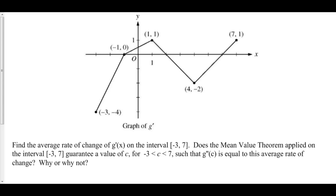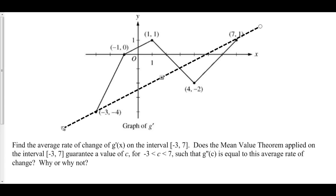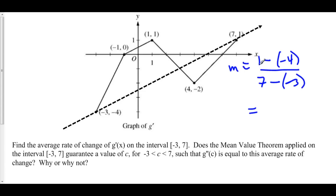Find the average rate of change of g prime on the interval from negative 3 to 7. Does the mean value theorem guarantee a value of c between negative 3 and 7 such that g double prime of c equals this average rate of change? The average rate of change is the slope of the line between the two points. Computing y2 minus y1 over x2 minus x1: 1 minus negative 4 is 5, and 7 minus negative 3 is 10, giving an average rate of change of 1 half.